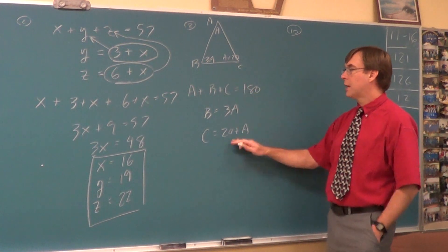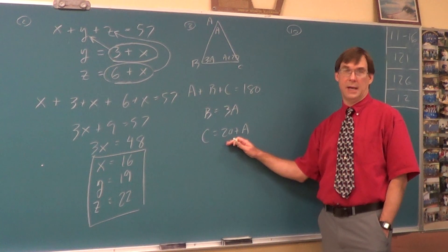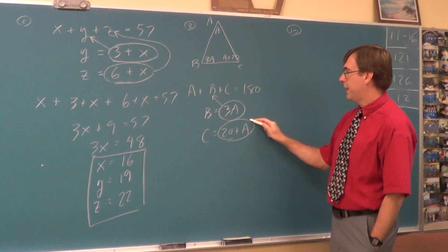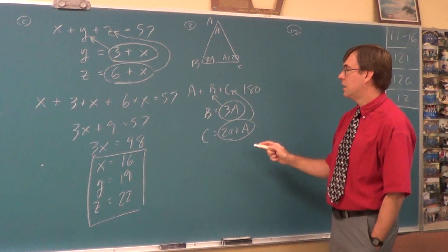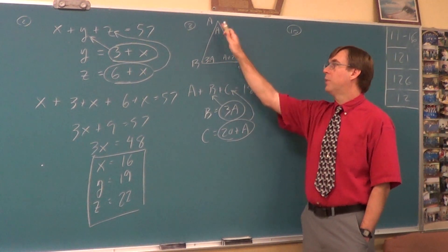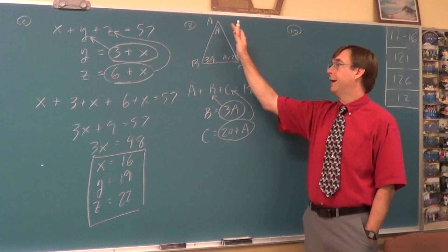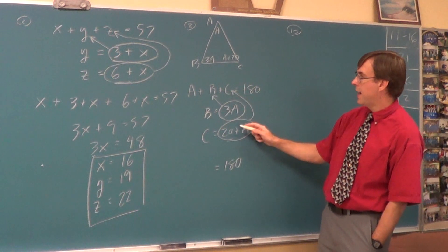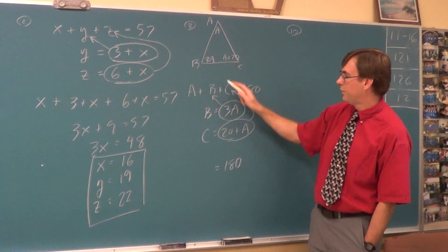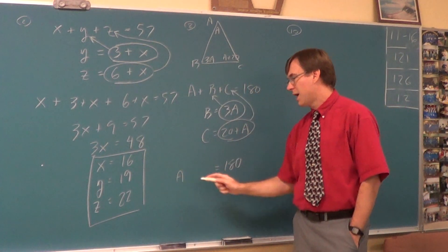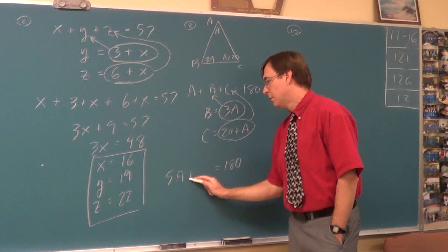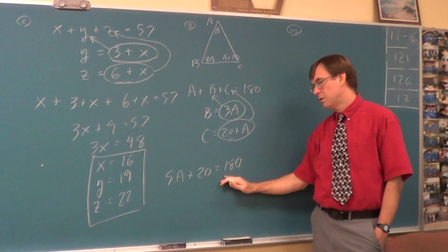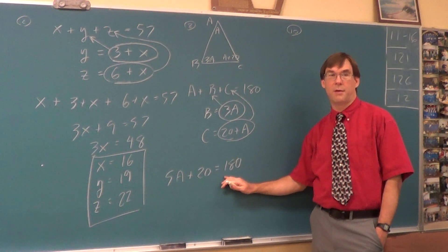A plus B plus C has to equal 180. Then you have two ways to go. What is this set up to have us do again? Substitution. The 3A can replace B. The 20 plus A can replace C. Or, if you're looking at the picture, add up all those angles. Whether you're looking at the picture, or whether you're looking at the equations that we made, if you add this stuff all up, how many A's are there? Five. So 5A plus 20 equals 180.